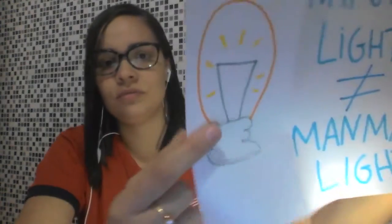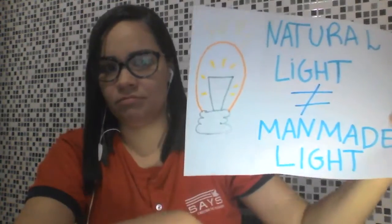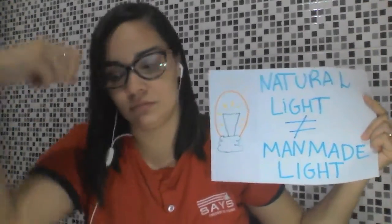So, this is a lamp. Ok? Natural — it's what comes from nature. Example: this is natural. The sun light is natural. Yes? This is natural. Alright?